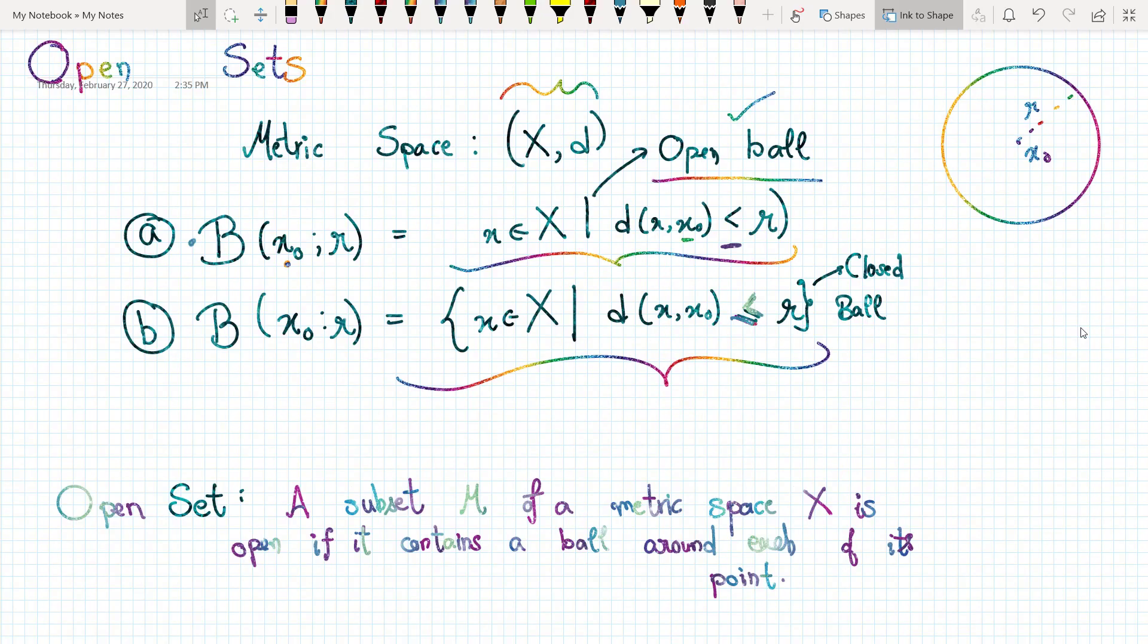Now when I talk about a closed ball, the idea remains almost the same, but this time I'm also including the boundary points. Remember in open ball, it was all such points x which are at a distance less than r. In a closed ball, it's the set of all such points x at a distance less than or equal to r.